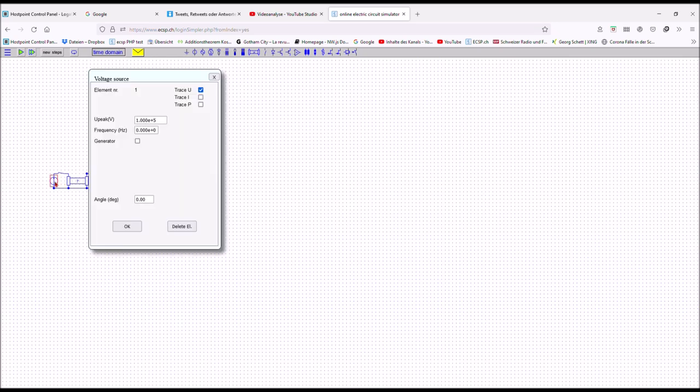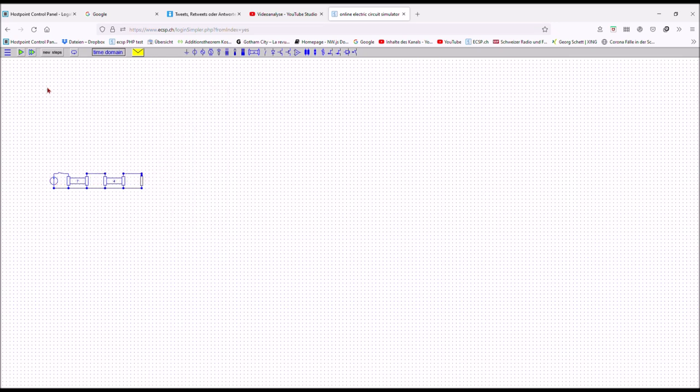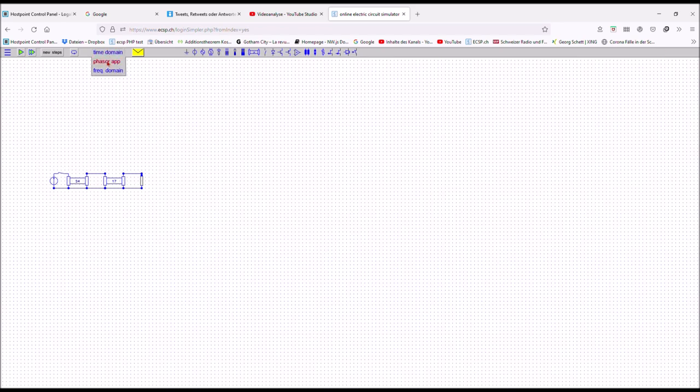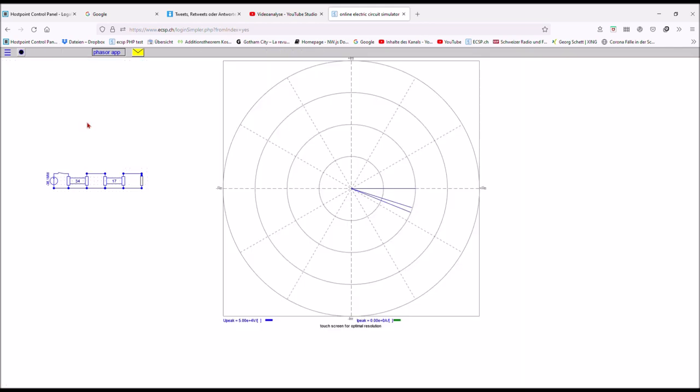For demonstration purpose I change the frequency of the DC source to 50 hertz. I can also switch to the phaser application and see what happens at 50 hertz with the phasers.